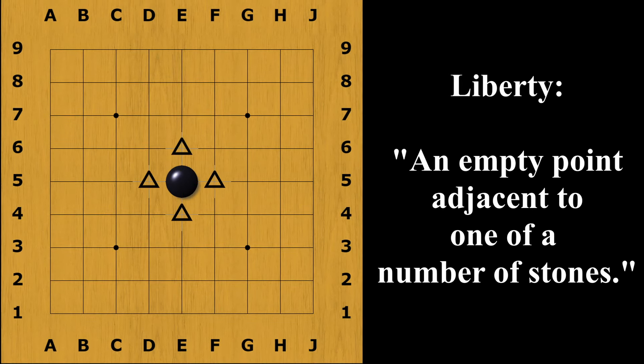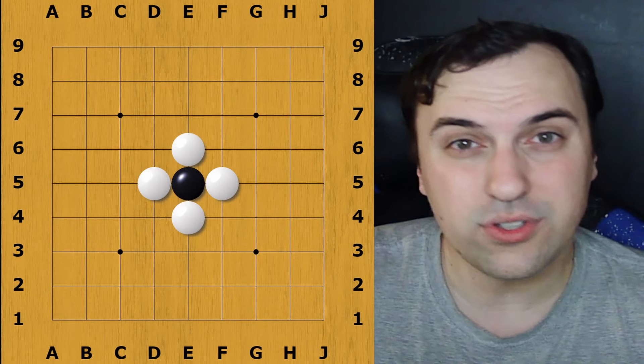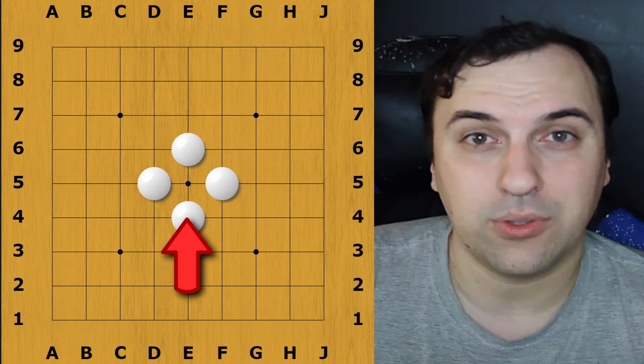A Liberty is a line or point touching your stone. A stone in the center of the board has four liberties. If you lose all of these liberties, then you will be captured. A captured stone will be removed from the board and will not count towards your points at the end. So make sure you keep those stones alive.